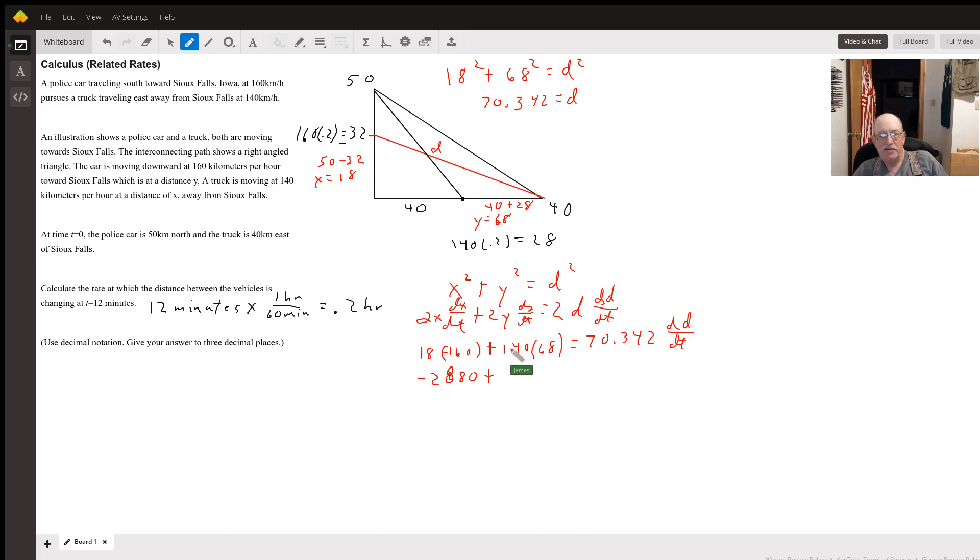Going east, he's going 140 kilometers an hour and he's at 68 miles so I got 140 times 68, that's 9520.